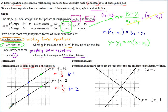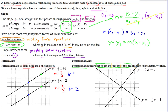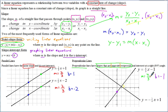Now let's talk about perpendicular lines. Perpendicular lines have slopes that are opposite reciprocals — there are two things here: opposite and reciprocal. Perpendicular lines intersect at a right angle, or 90 degrees. The slope of the first linear equation here is positive four-thirds, and the Y-intercept is negative 1.